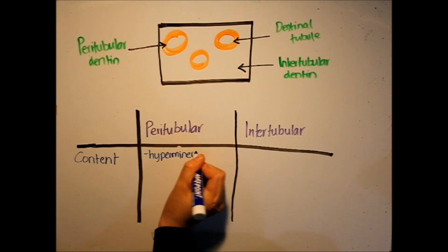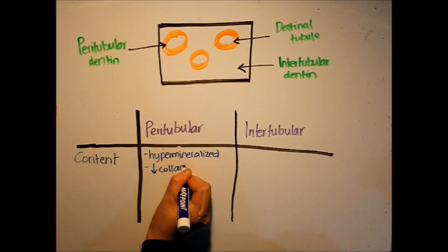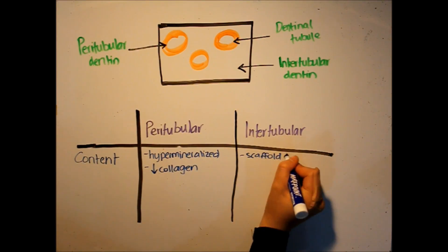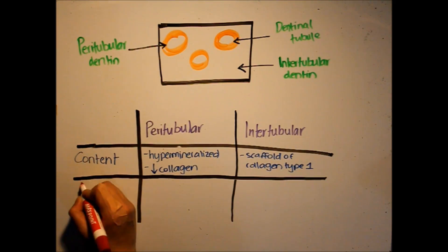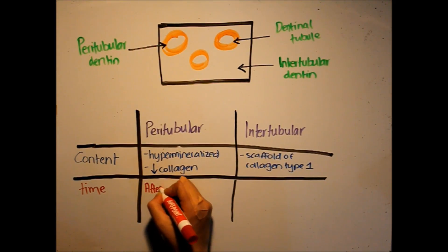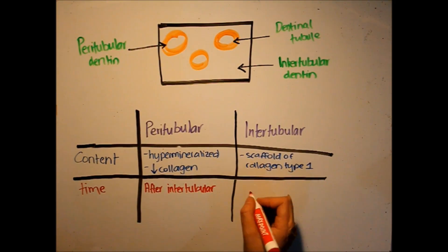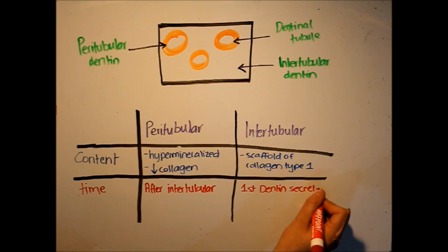Another difference is the time of formation. Intertubular dentin is formed first. In fact, it is the first type of dentin secreted by odontoblast cells and makes up the bulk of the dentin. Following the intertubular dentin's deposition, peritubular dentin is formed and transported by odontoblastic processes from cell bodies.